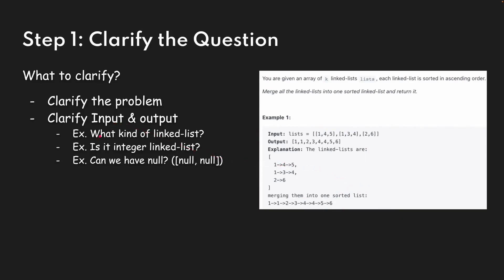Sometimes the interviewer might not give you an example, and it's your task to ask. Here you can see some clarifying questions — for example, what kind of link lists are we talking about? Is it a circular link list or a singly link list? Is it going to be an integer link list, or can it contain characters or strings? Do we have to do any validation check? Can there be null values? These are constraints we need to clear up before discussing approaches.